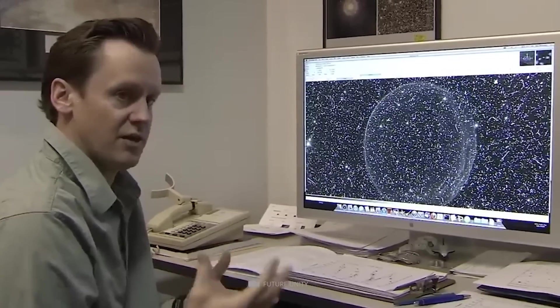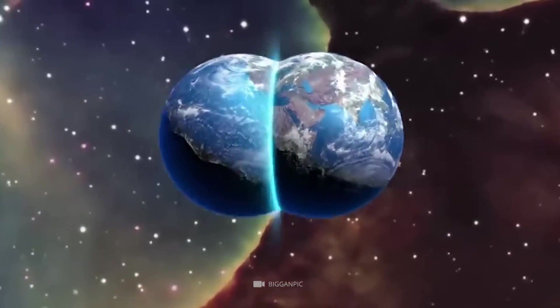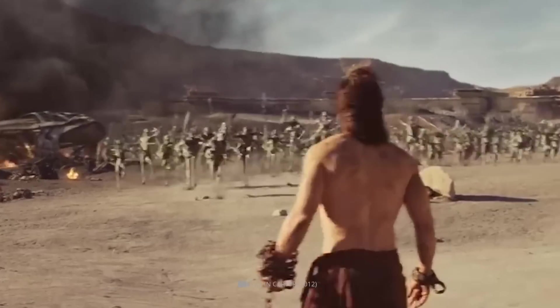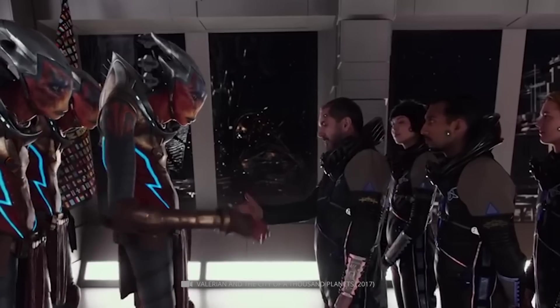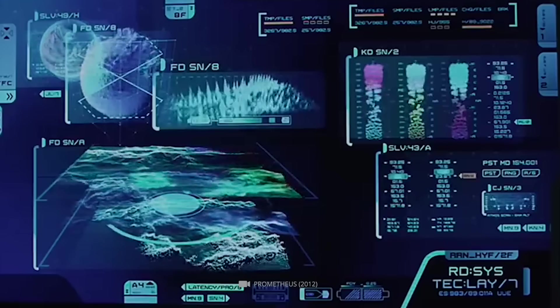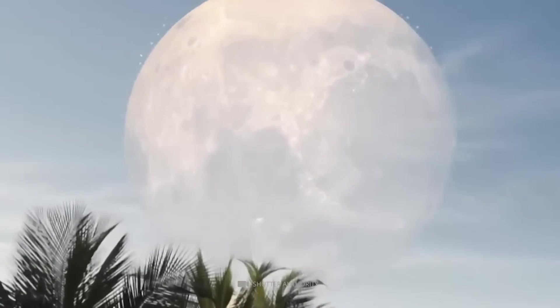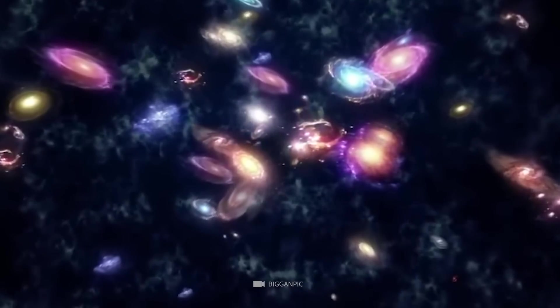However, one option suggests that another universe might not exist in the same time and space as ours. These universes can be the same but with different events, or they can be different even on the basic level of matter. Scientists predict that these universes can exist in different geometrical dimensions and have different physical constraints than our universe. In other words, parallel universes could be a reality.